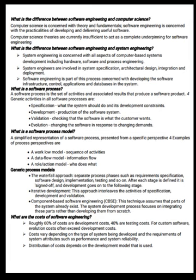The system development process focuses on integrating these parts rather than developing them from scratch. What are the costs of software engineering? Roughly 60% of the costs are development costs and 40% are testing costs. For custom software, evolution costs often exceed development costs. Costs vary depending on the type of system being developed and the requirements of system attributes such as performance and system reliability. Distribution of costs depends on the development model that is used.